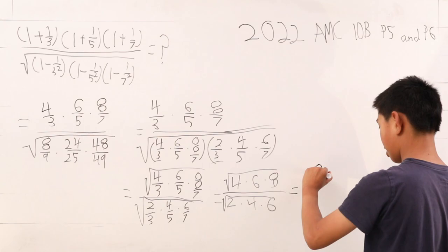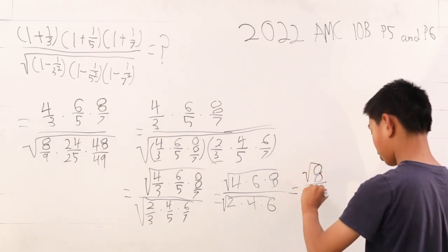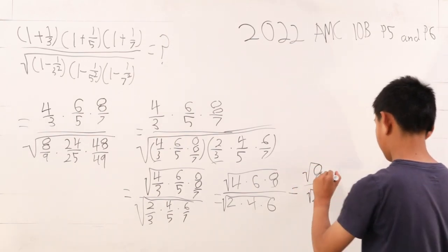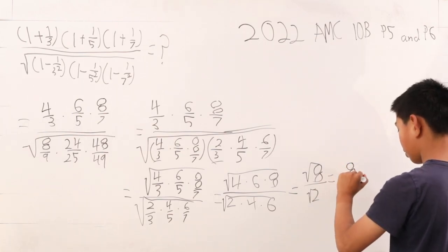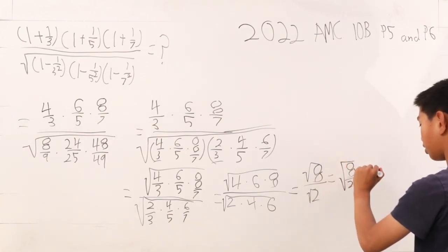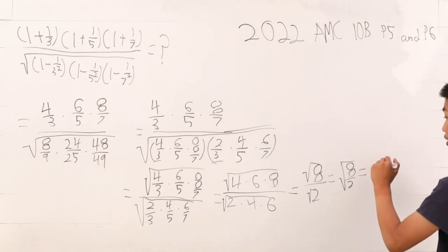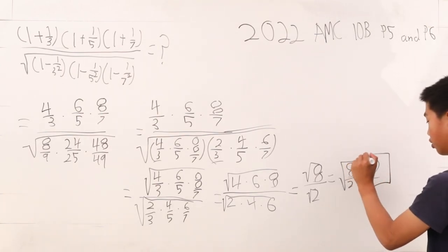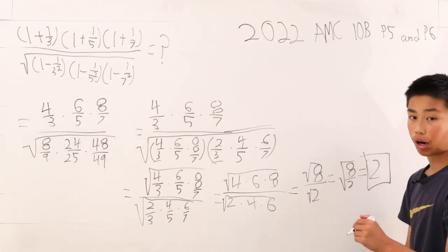All you get is square root of 8 over square root of 2. This is the square root of 8/2. This is positive or negative 2, but in the answer choices, it's 2. So 2 is our answer for problem 5.